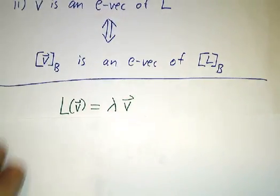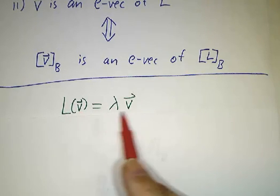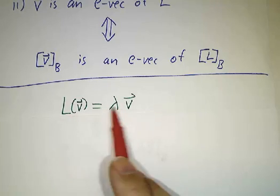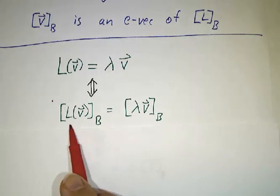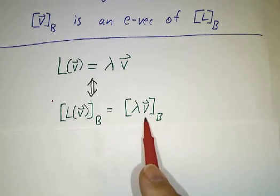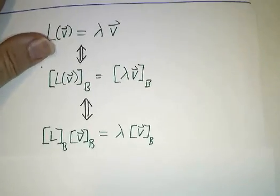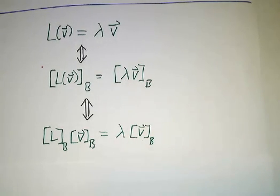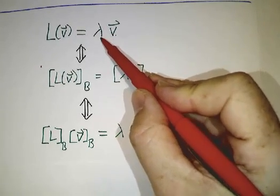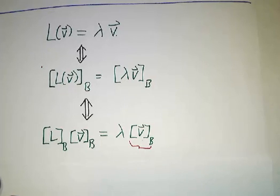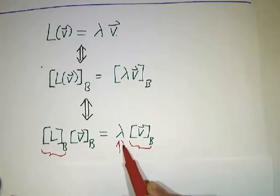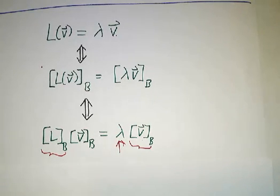The reason is: to find eigenvectors of the operator, we want nonzero vectors satisfying L(v) = λv. This holds if and only if the coordinates of L(v) equal the coordinates of λv. The coordinates of L(v) are obtained by multiplying the coordinates of v by the matrix of L, and the coordinates of λv are just λ times the coordinates of v. So we'll develop techniques for finding eigenvalues and eigenvectors of matrices, and then for any linear operator, just find its matrix and apply the same techniques.